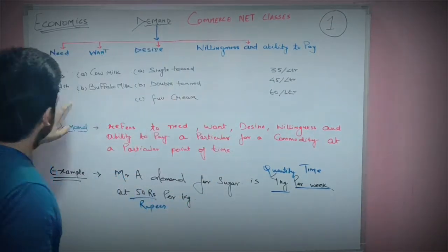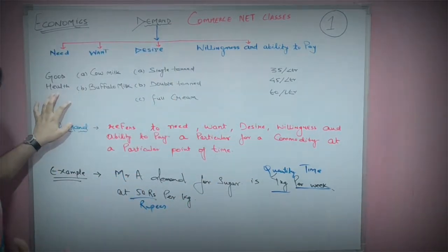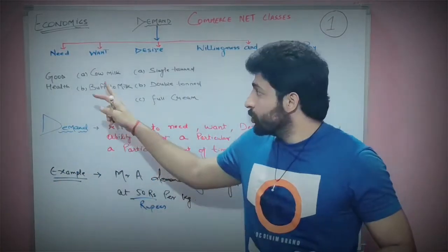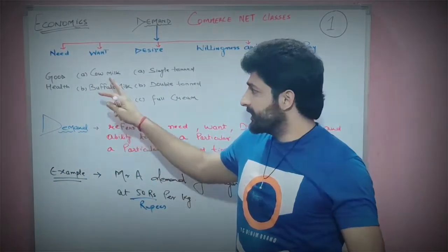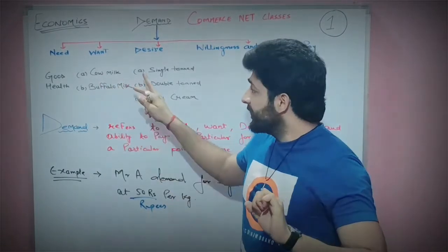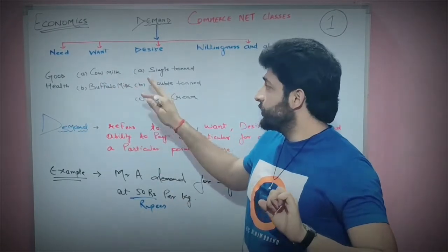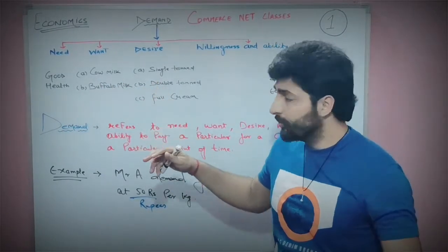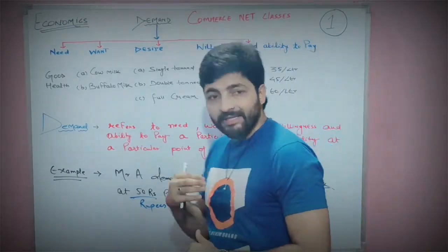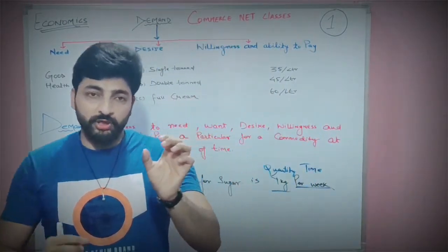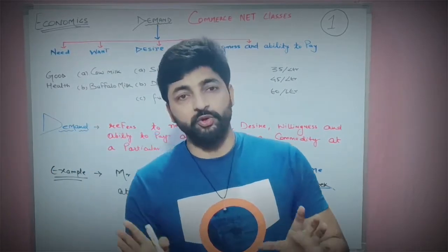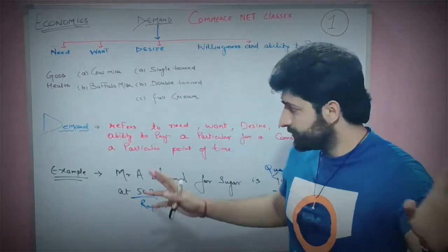If you need a good option, for example, we can consider options like cow milk available in the market — single-tone, double-tone, full cream, and so on. And willingness to pay means that we want to give money for the price of the commodity. We are not just wishing; we are actually buying.